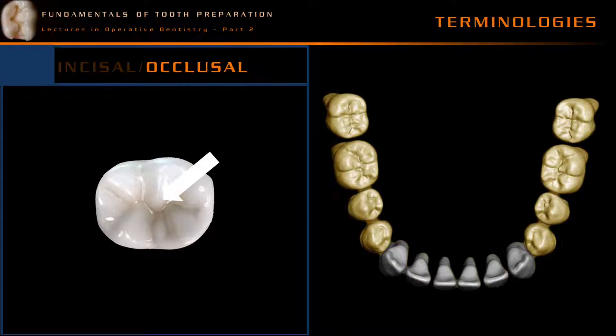In posterior teeth — that is premolars and molars — the grinding surface of the teeth is called by the term occlusal surface.